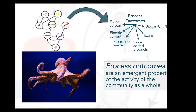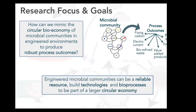As a whole, these process outcomes are an emergent property of the activity of the community. My focus is on how we can mimic this circular bioeconomy of microbial communities in engineered processes to produce more robust outcomes. Because they're a community and a network, there's an inherent robustness — the stability of the whole community is itself an emergent property. Understanding how that stability comes about is a big part of my research, so we can move toward engineered microbial communities as a reliable resource to build technologies and bioprocesses as part of a larger circular economy.